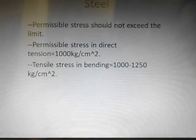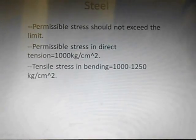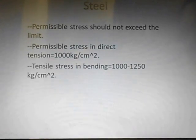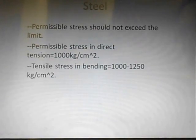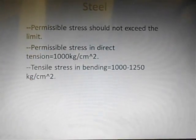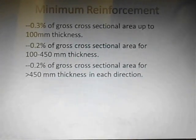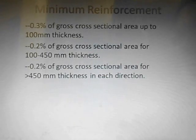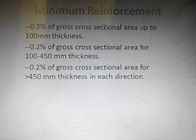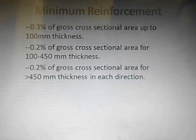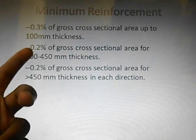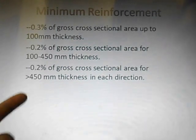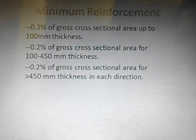Coming to steel, we will use torced steel, that is Fe 450, having a yield strength and varying diameter from 8 mm to 20 mm at different sections. The permissible limits are as listed. Coming to minimum reinforcement — this is based on the thickness of a member. If thickness is 100 mm, 0.3% of the cross-sectional area is used. If thickness varies from 100 mm to 450 mm, 0.2% of cross-sectional area is used. If thickness is greater than 450 mm, 0.2% of cross-sectional area is used.